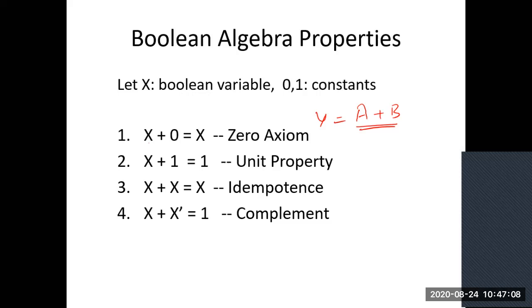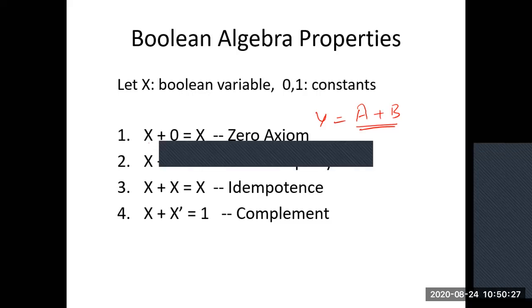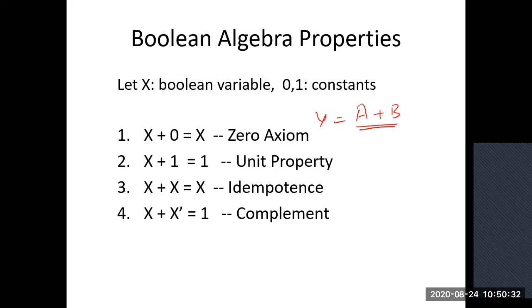Similarly, if you substitute one in place of X, then X plus one equals one — it doesn't depend upon the value of X. The third thing is when both inputs are equal: A plus A gives A as output. This second property is the unitary property; the third is the idempotent property. And if you give X and X̄, you will get one — that is the complement property.